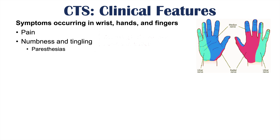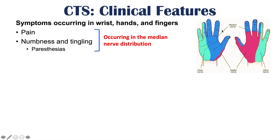These symptoms occur in the palm, the thumb, the forefinger, the middle finger, and half of the ring finger. Most often, patients experience pain, numbness, and tingling in those fingers — the thumb, forefinger, middle finger, and the half of the ring finger closest to the middle finger. The other half of the ring finger is typically not affected.